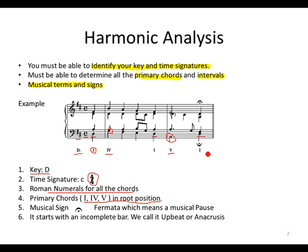We also see a sign — a fermata — which means a musical pause. You must be able to recognize signs, name them, and explain them. We also notice that the passage starts with an incomplete bar. What do we call an incomplete bar? A beat, or anacrusis. With harmonic analysis, you must be able to identify all these elements in the passage.